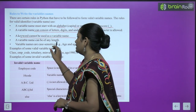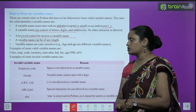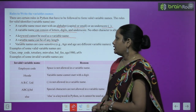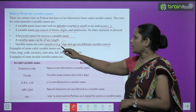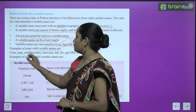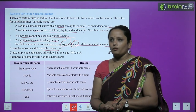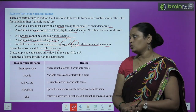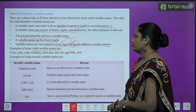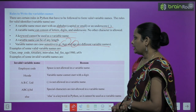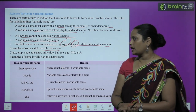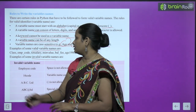A variable name can be of any length. Variable names are case sensitive — for example, 'age' and 'Age' are two different things. Examples of valid variable names: class, emp, underscore_code, tot_salary, min_value, bell_fee, age1980, a, 45r. In all valid examples, you can see an alphabet is used at the start.